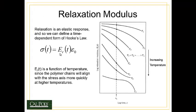Now this E_R of t, or the relaxation modulus, is a function of temperature. Since the polymer chains align with the stress axis more quickly at high temperatures. So for example, if we look at this plot, we have relaxation modulus on a log scale versus time, we see that at very low temperatures, T1, the relaxation modulus doesn't change very much as a function of time. But as you get to higher temperatures, for example, T4, the relaxation modulus drops dramatically as a function of time, because of the allowing of chain rotation and chain alignment.